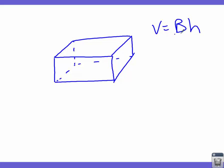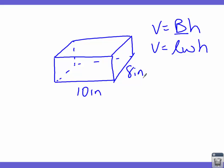The capital B is the area of the base, so we plug in the area formula for a rectangle, which is length times width — that gives us the familiar length times width times height formula for a box. Let's say the length is 10 inches, the width is 8 inches, and the distance between the two bases is 4 inches. Remember, in a prism it has two congruent bases.